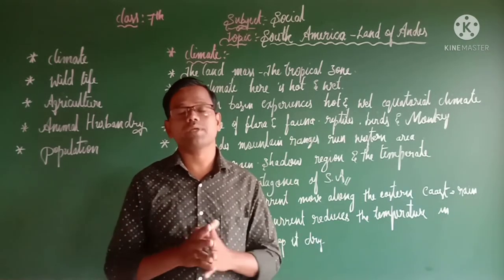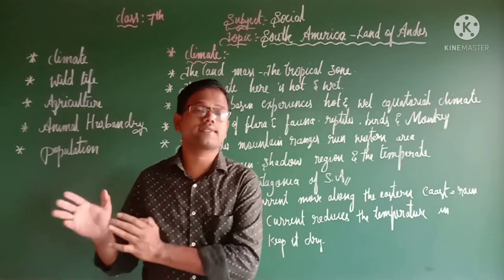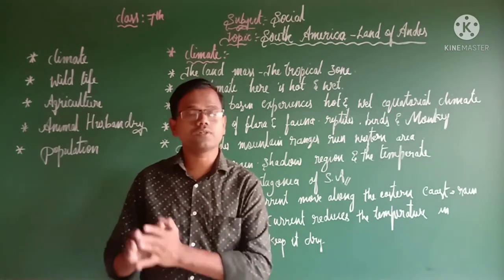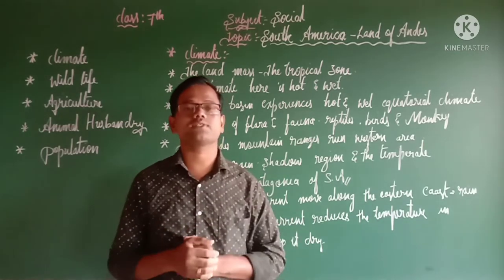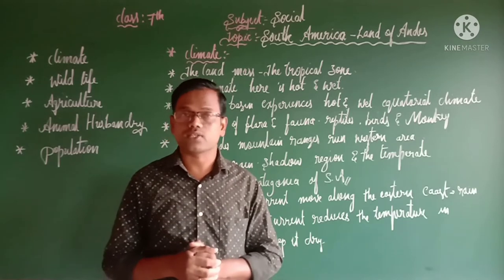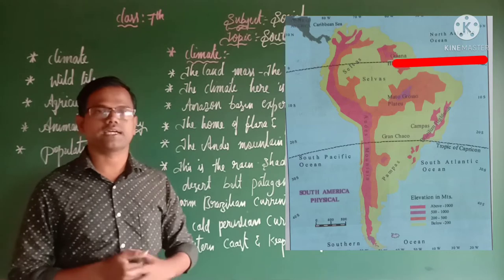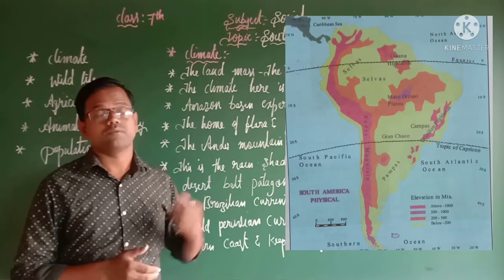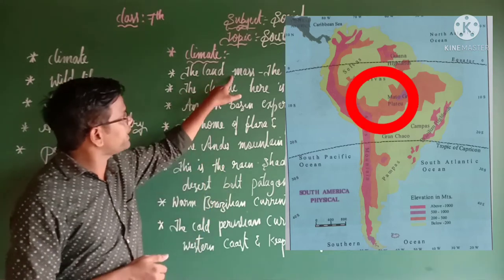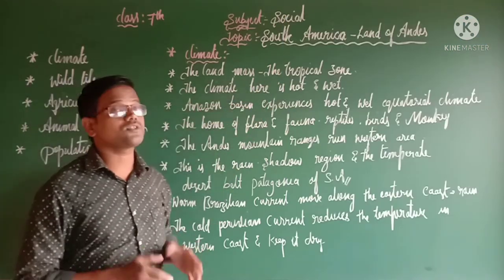South America has a variety of climates because of its latitudinal and longitudinal extent, and the presence of both the Pacific Ocean and the Atlantic Ocean. South America has two important lines — the equator and the Tropic of Capricorn. The land mass between these two lines is called the tropical zone, where the climate is hot and wet.